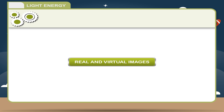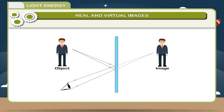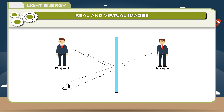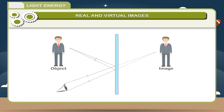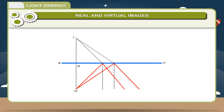Real and Virtual Images: The image which can be obtained on a screen is called a real image. It is formed when light rays after reflection actually intersect. The image which cannot be obtained on a screen is called a virtual image. It is formed when light rays after reflection do not intersect or appear to diverge — when they are produced at the back, they appear to intersect.